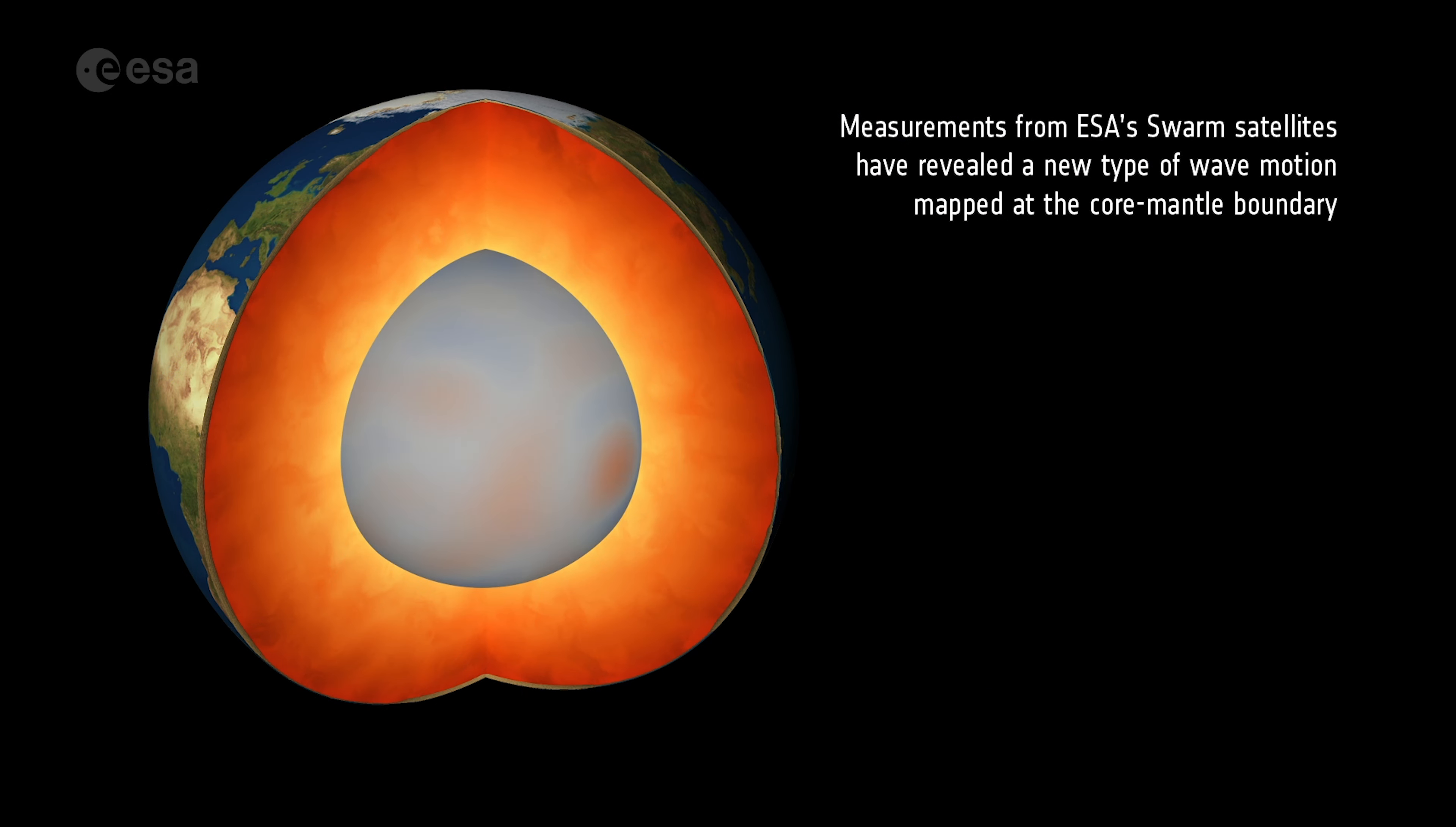Measurements from ESA's Swarm satellites have revealed a new type of wave motion mapped at the core-mantle boundary. The wave oscillates around every seven years, propagating westward at 1,500 kilometers a year.